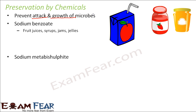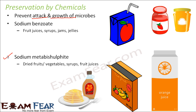Sodium metabisulphite is another chemical preservative, seen in dried fruits, dried vegetables, syrups, and fruit juices. Fruits and vegetables that are dried and packed will stay for a longer period. For example, dried and refrigerated peas are now available in packets throughout the year.